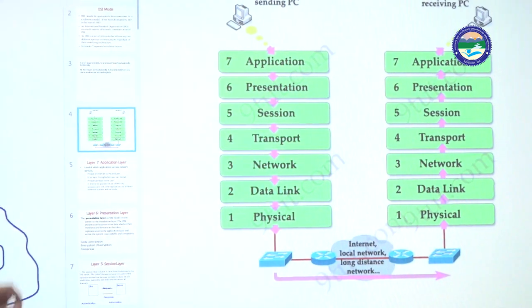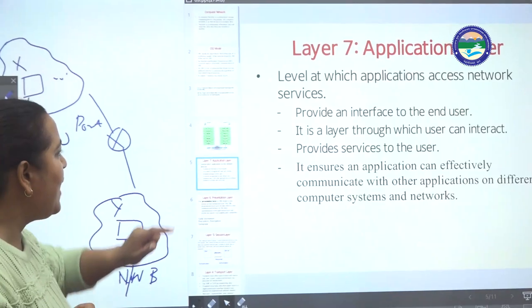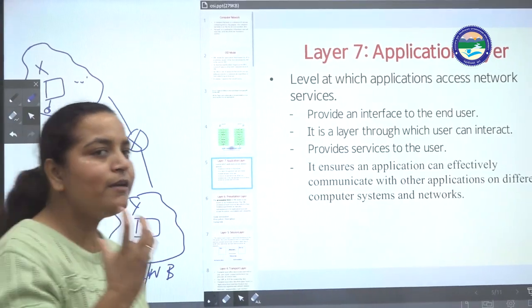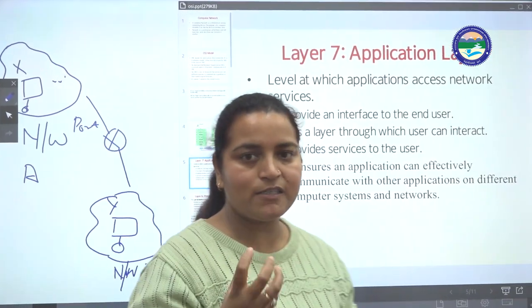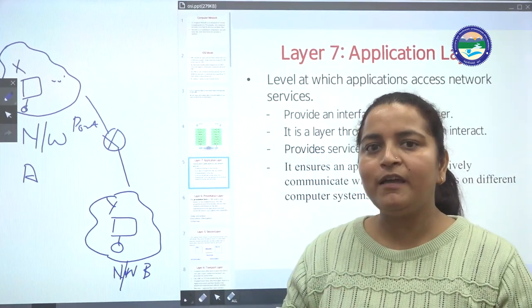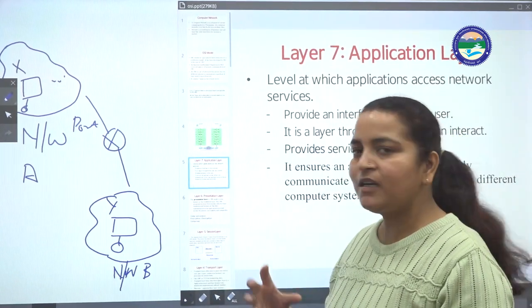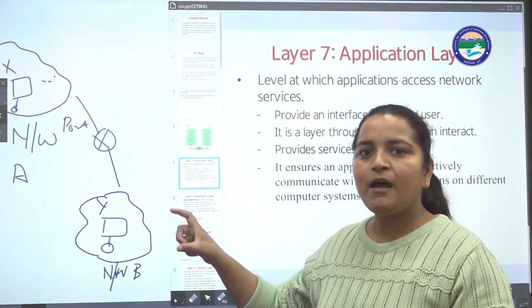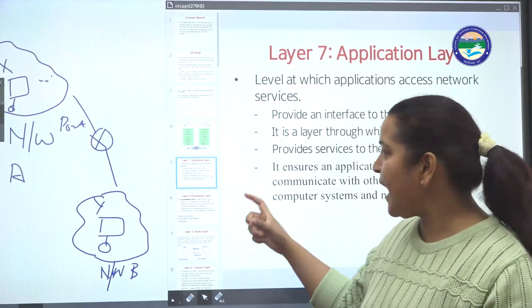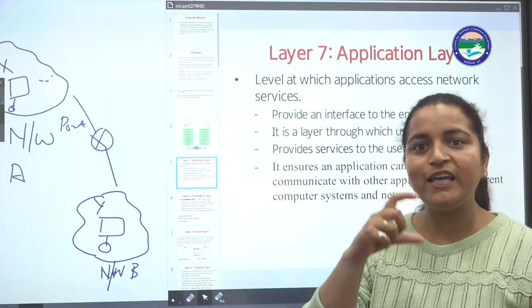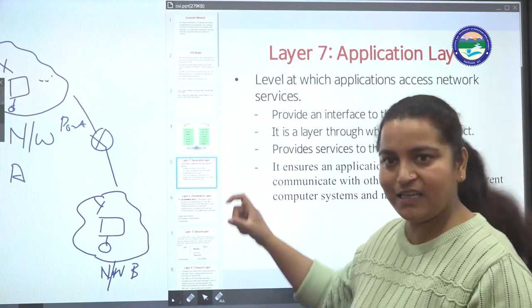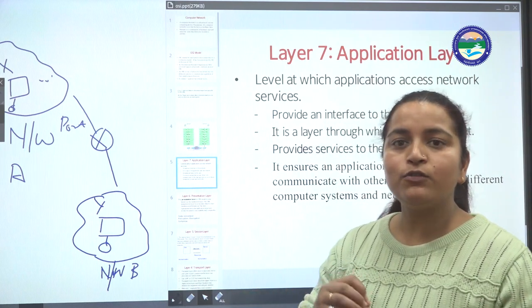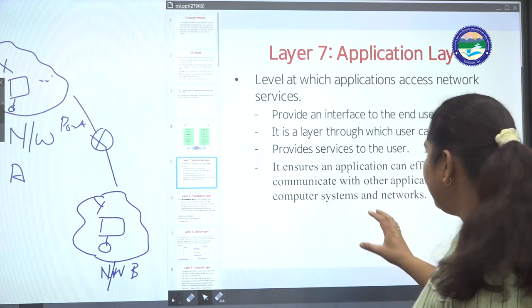The application layer is the interface provided to the end user. Suppose we are using Wikipedia, web browsing, or Gmail, we search something in the web browser or use the app. The application layer provides the interface to the end user.